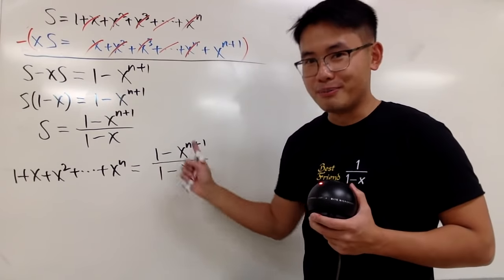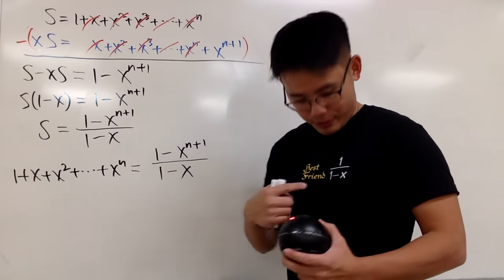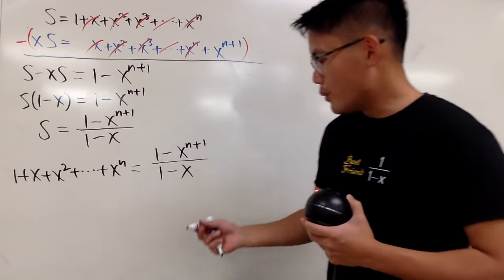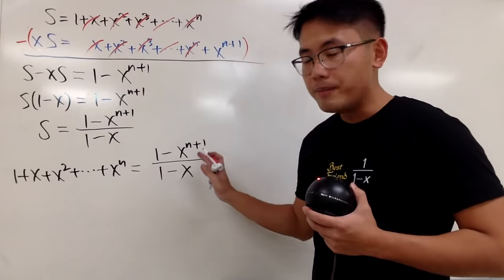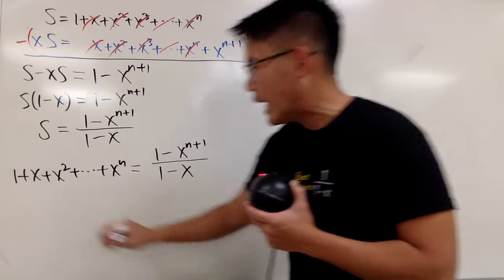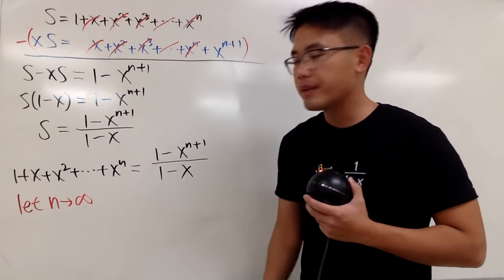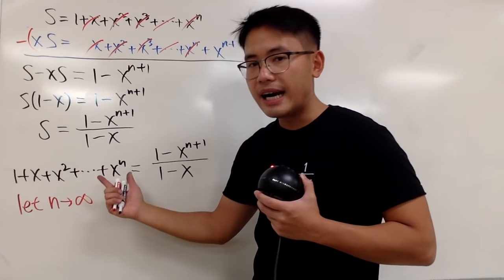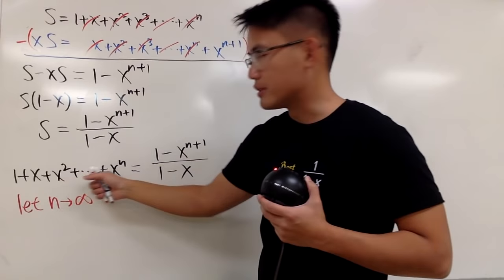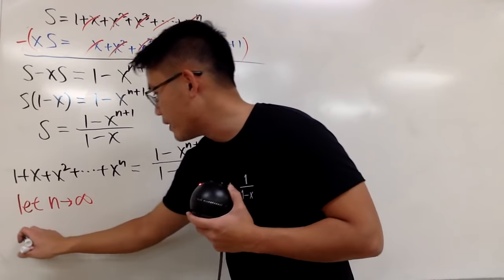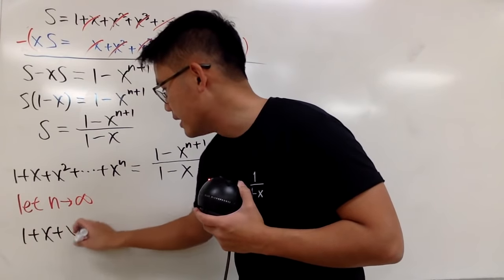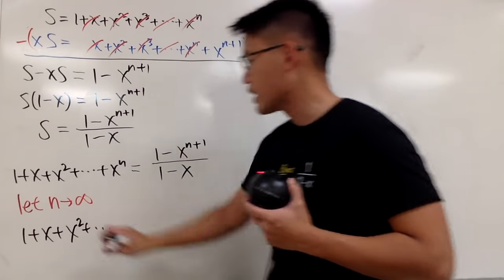This right here, it's pretty much a mom. But how can we go from the mom to the best friend? Well, from here, this is only finite, so I will have to say, let n go to infinity. In that case, on the left-hand side, we'll pretty much have just a dot dot dot. So in another word, we have 1 plus x plus x squared plus dot dot dot. Keep on going forever. So this will be the following.